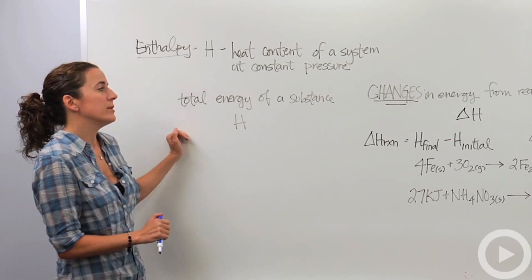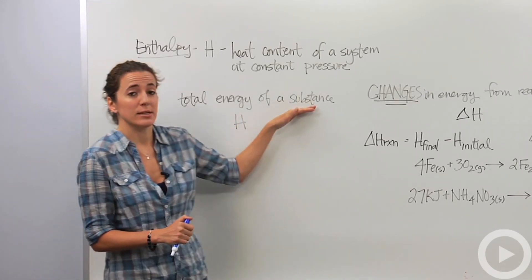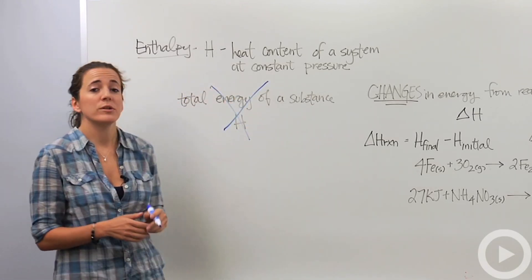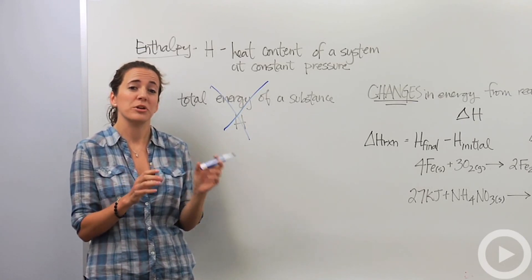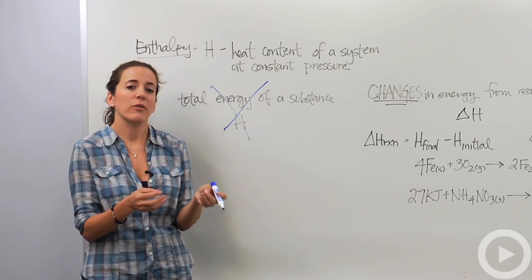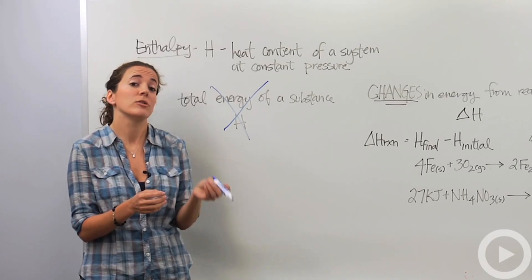So there are two ways we can do this. We can say the total energy of a substance, we're just going to call that H. This is actually impossible to do. Chemists can't do this. There's just too much involved in one particular substance that we don't actually even fully understand even now to figure out the actual energy of that content without changing it.